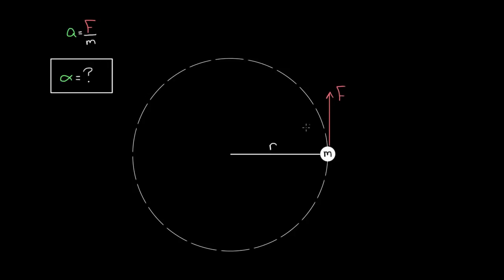Remember, torque is R times F times sine theta, but let's make it simple. Let's say the angle is 90, so that sine theta will end up being one. And let's say this force is the net force — there's only one force on this object. We know that the net force has to be equal to the mass of the object times the acceleration of the object. We want to relate torque to the angular acceleration, so let's write down the torque formula.